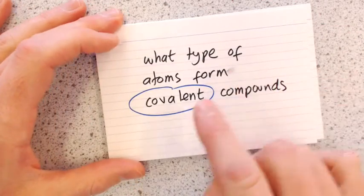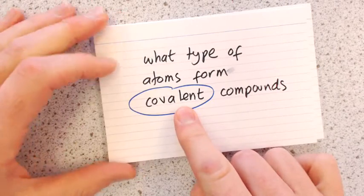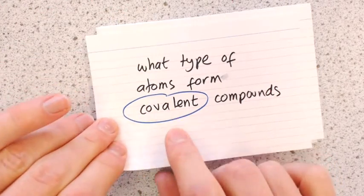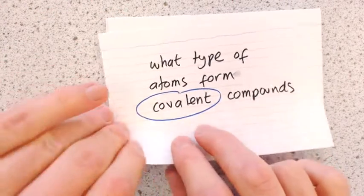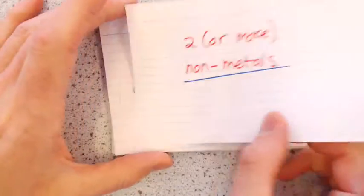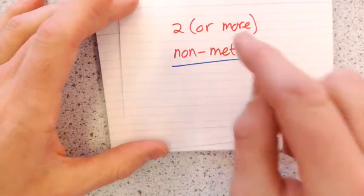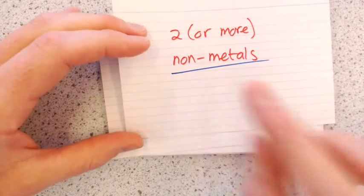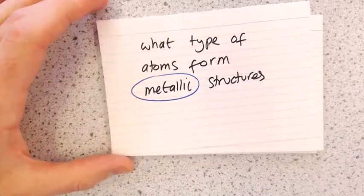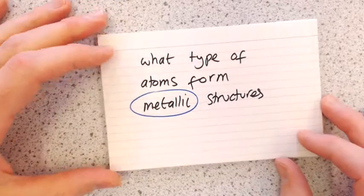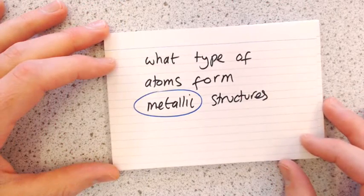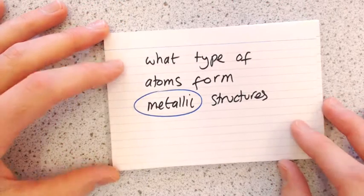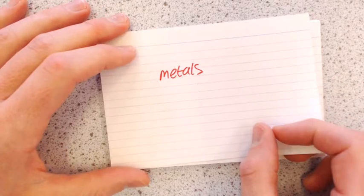What type of atoms form covalent compounds? You need two or more non-metals — the right-hand side of the periodic table. What type of atoms form metallic structures? You need metals.